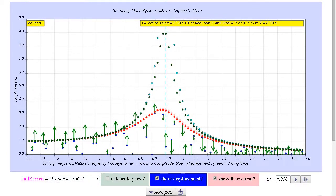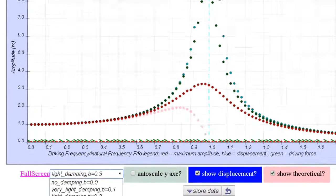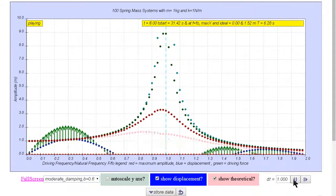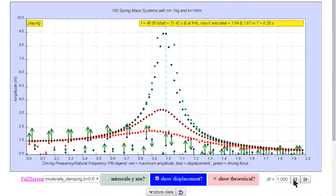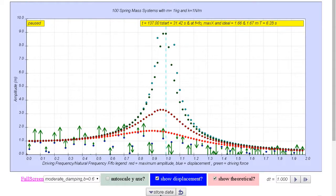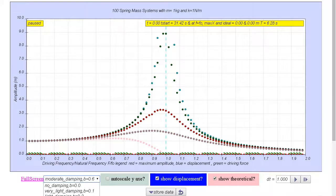Now let's look at the moderate damping case, and when we click play, the system oscillates, and very quickly, the maximum amplitudes saturates to the theoretical steady state amplitudes. And for the critical damping case.